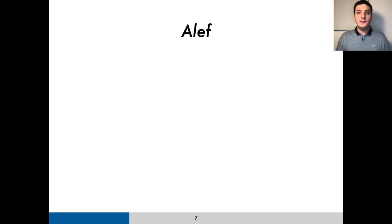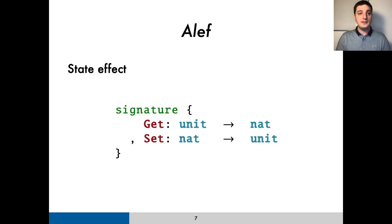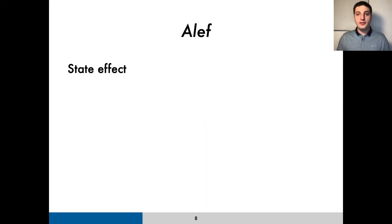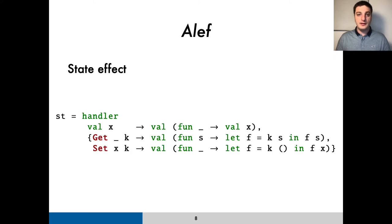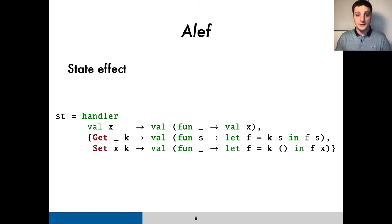As a running example for this talk, let's take a look at our version of the state effect, representing the current state with a natural number. First, we need to introduce the program's effect signature, which in Aleph we write like this. This is obviously the usual state signature that consists of the two state operations. Next, we need to introduce a way to interpret these operations. To do so, we define the state handler, or st, that gives them the standard state carrying function interpretation.